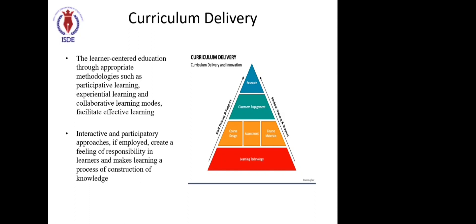Yes — you have to ensure that the curriculum delivery has to be changed based on understanding the visual, kinesthetic, and auditory conception of the particular batch of students. If a particular batch has more than 60% of students who are strong visually, your curriculum delivery should be more towards visual aspects. There are several methodologies used to assess your particular batch of students before choosing your delivery method.